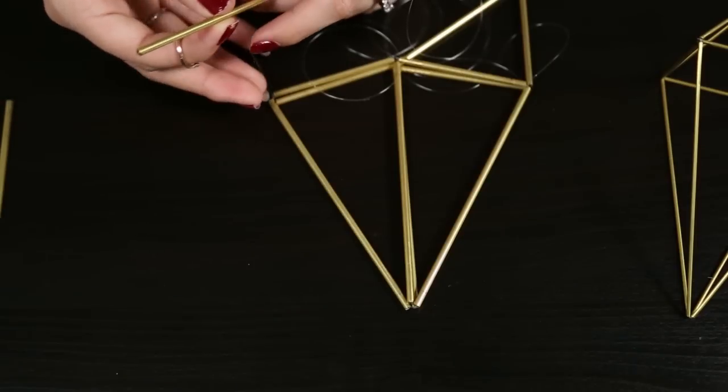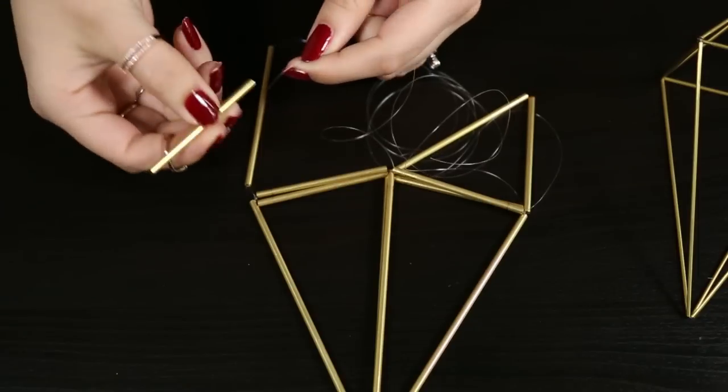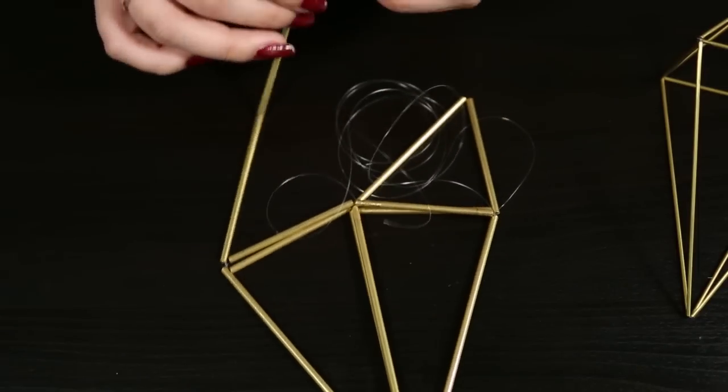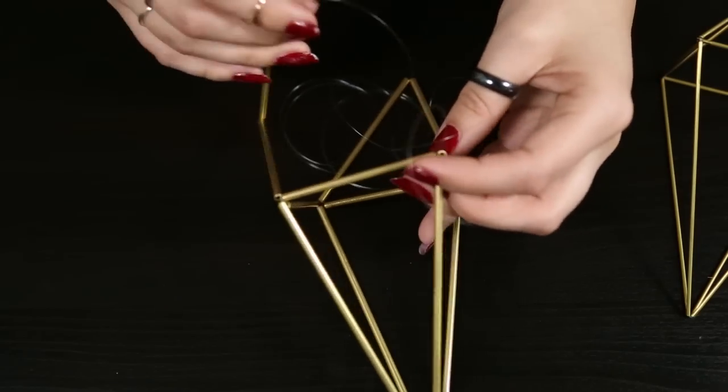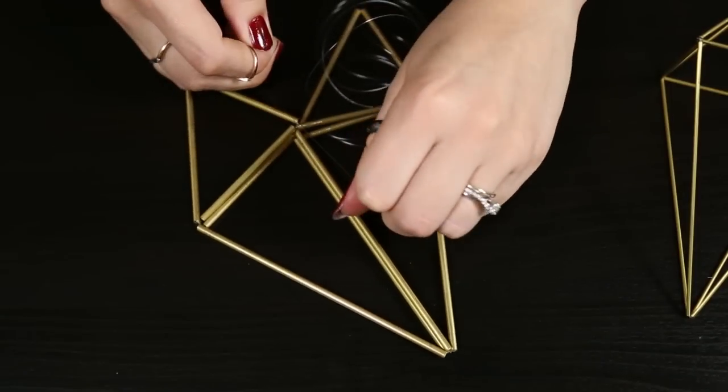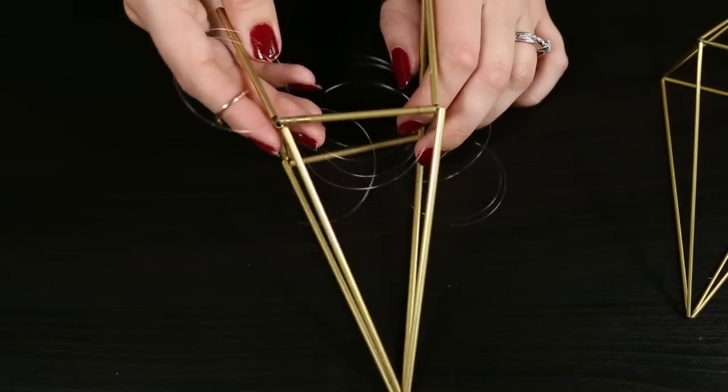So do the same thing for the opposite side. Again mine are uneven because I want this to lay on the wall flat so I created one longer than the other. So make sure to tie those off nice and snug and you're almost done.